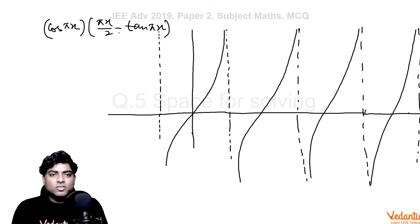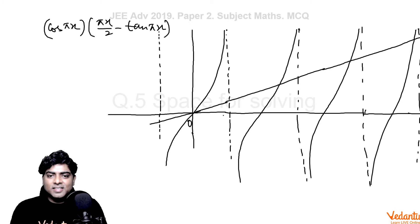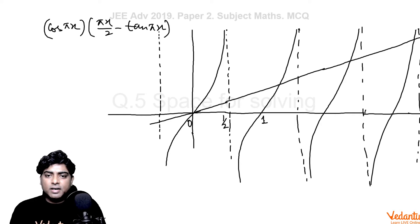Drawing y = πx/2 as a line through the origin — since π is already multiplied into tan(πx), on the x-axis the asymptotes appear at 1/2, 1, 3/2, 2, 5/2, 3, 7/2. The intersections of the line y = πx/2 with the tan(πx) curve give us the critical points of f(x).